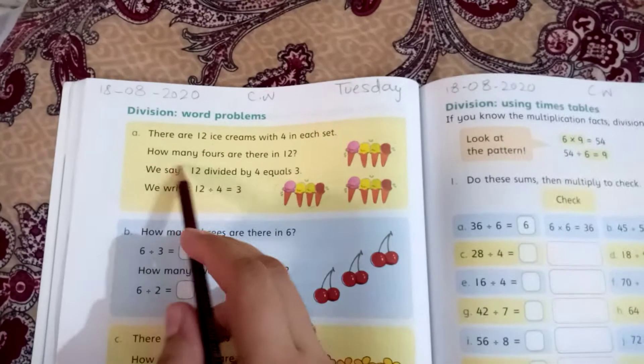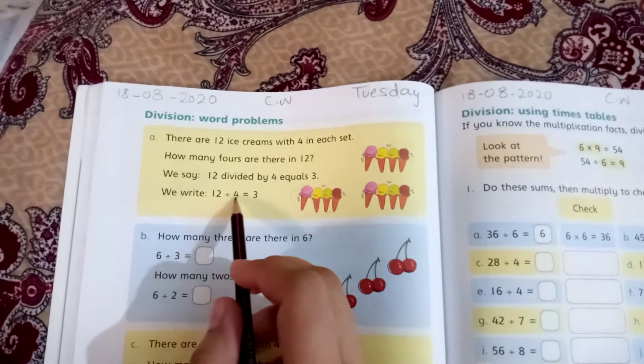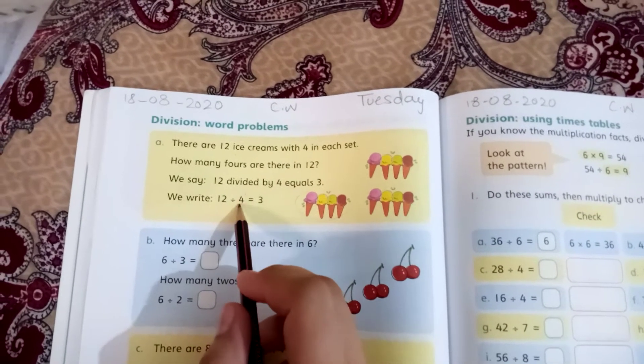How many 4s are there in 12? We will do 12 divided by 4. 4 is the smaller number.